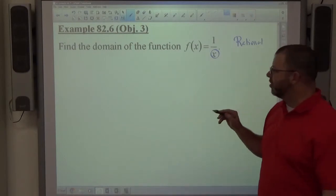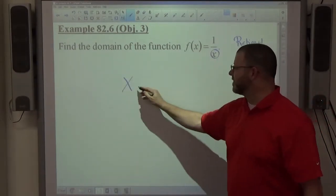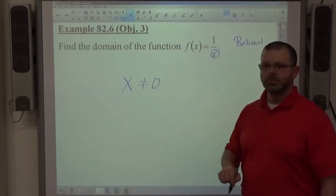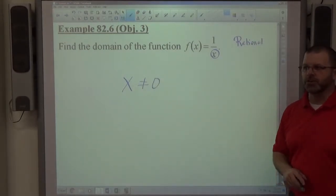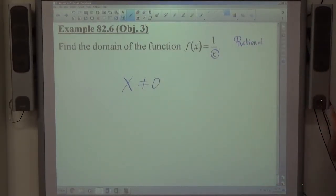And the rule of rational functions is simple. Whatever's on the bottom, in this case x, is not allowed to equal 0. That's the rule. That's the restriction. When I say x is not allowed to equal 0, that just means x can't equal 0. It can equal anything else.